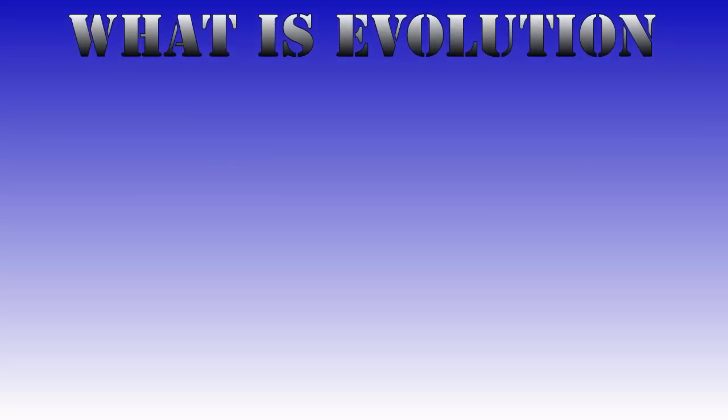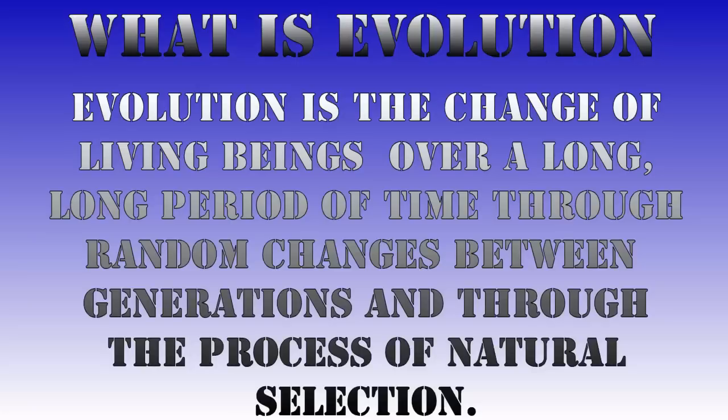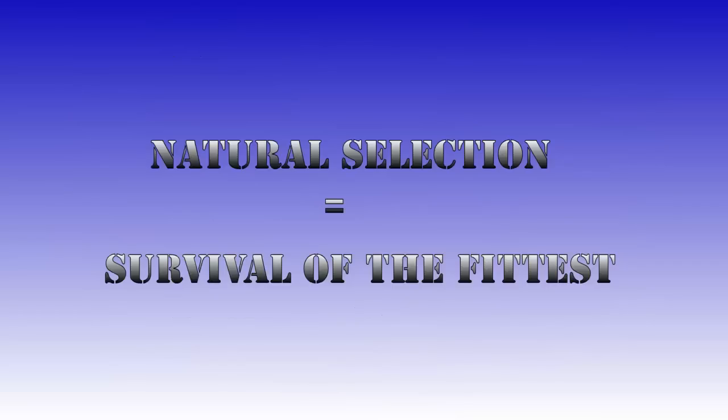So what is evolution? Evolution is the change of living beings over a long, long period of time, through random changes between generations and through the process of natural selection. As a side note, natural selection is also known as survival of the fittest, which is incorrect. A more appropriate name would be survival of the most flexible, but more on that later in this video.